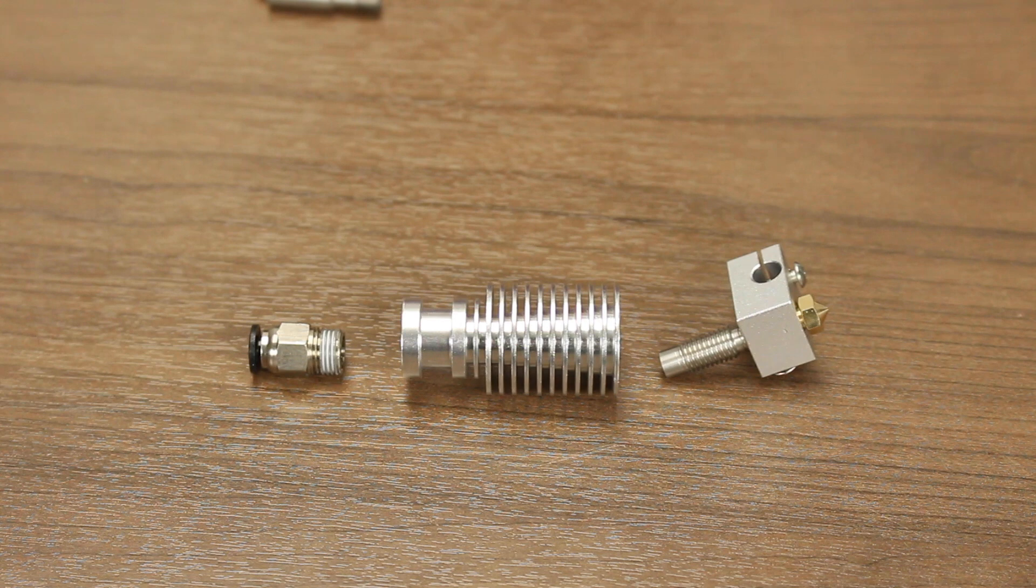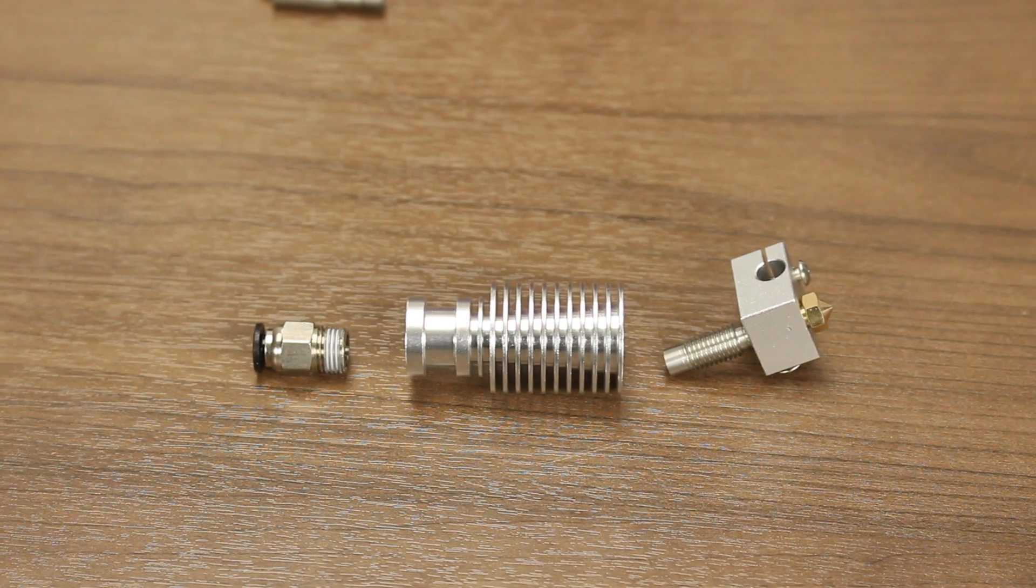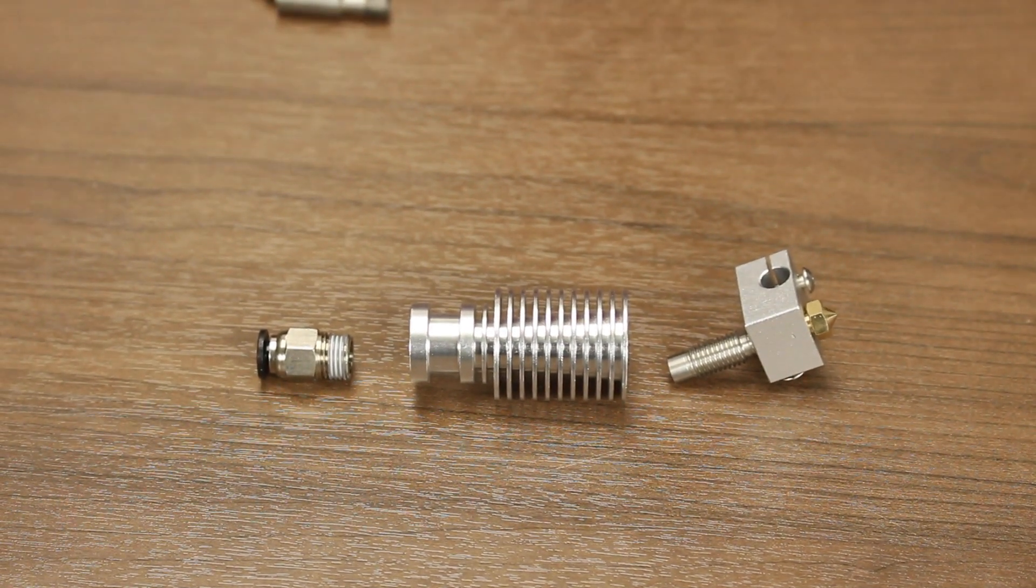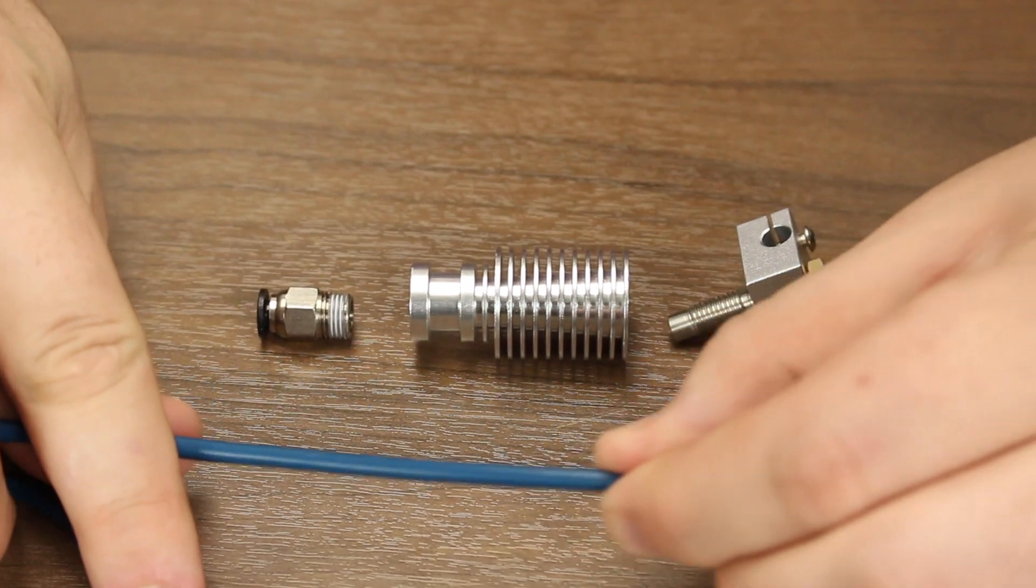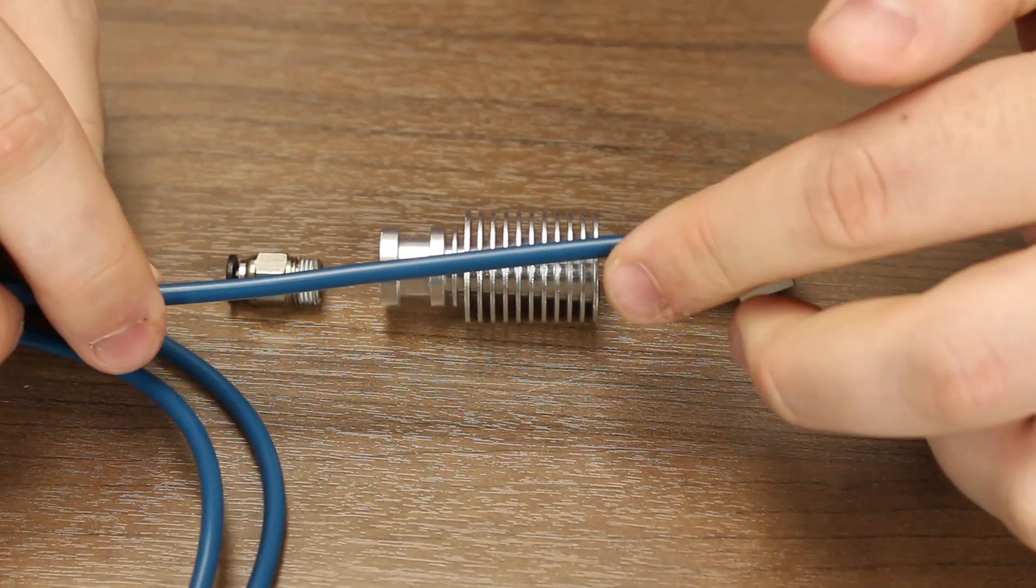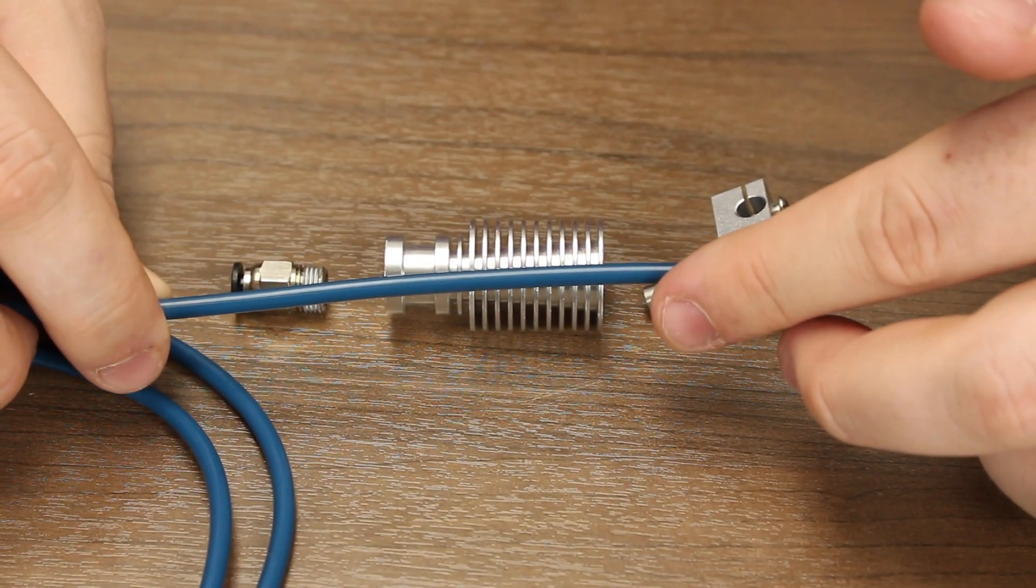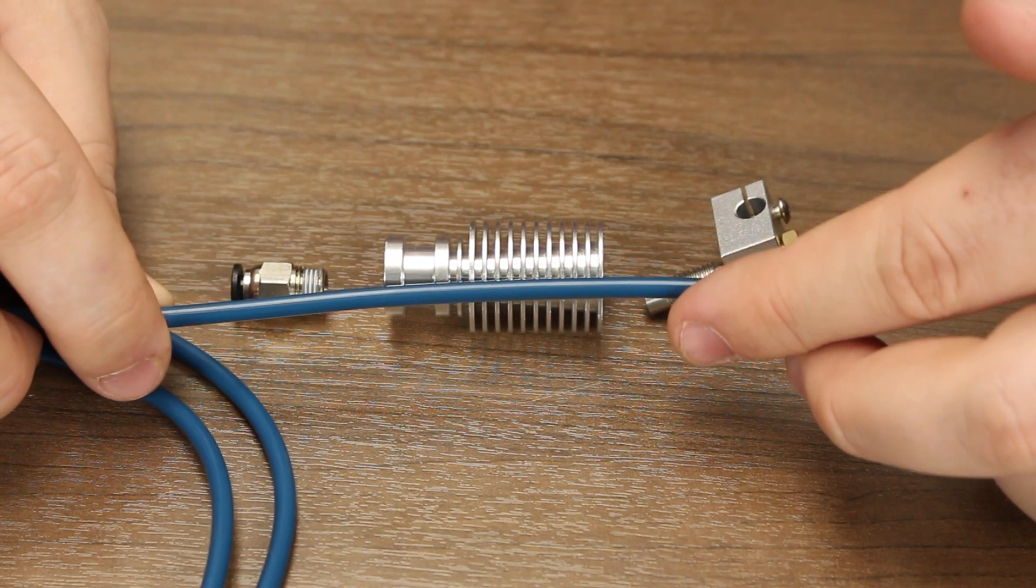After assembling the hot end, we need to screw our assembly into the heat sink. The heat sink on a Bowden system provides two functions. First it draws heat away from the melt zone and cools it. The second function of the heat sink is to support a pneumatic fitting that will allow us to put pressure on the PTFE and get a good seal with the nozzle.